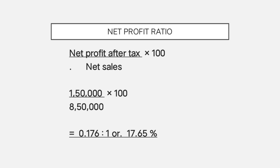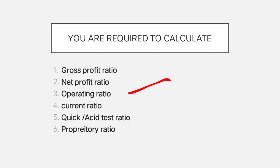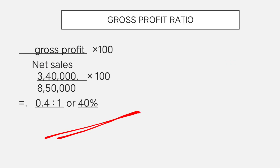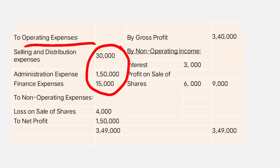Third, operating ratio. The formula is cost of goods sold plus operating expenses divided by net sales into 100. We need to find cost of goods sold. Operating expenses total: selling and distributional expenses 30,000, administration expenses 1,50,000, and finance expenses 15,000, totalling 1,95,000.